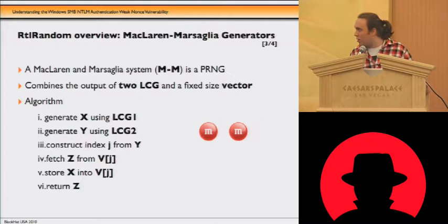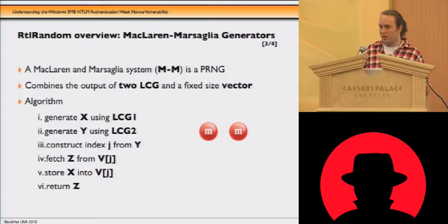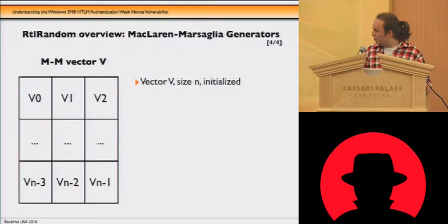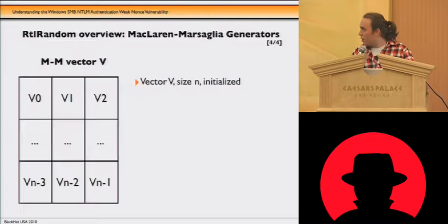In the paper proposing it, they also propose using a table of non-random numbers, because they need the properties of random numbers but are not dealing with prediction of a predictable sequence — they are dealing with long periods of random numbers. The basic algorithm is: first create two numbers using the LCGs, construct an index to use in the internal vector, fetch a value, and store a value, then return the previously fetched value.